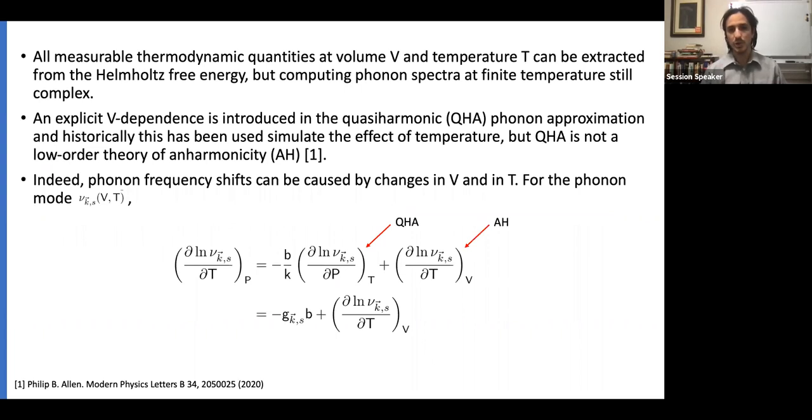All measurable thermodynamic quantities at a given volume and temperature can be extracted from the Helmholtz free energy. But in order to compute this quantity, you need accurate phonon spectra at finite temperature, and this is still pretty difficult to get computationally. The quasi-harmonic model has been used to simulate the effect of temperature by introducing an explicit volume dependence.